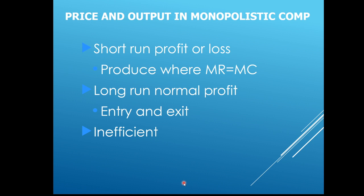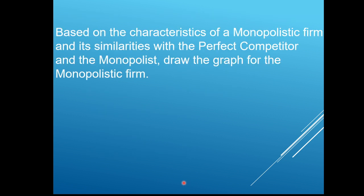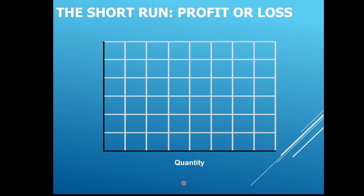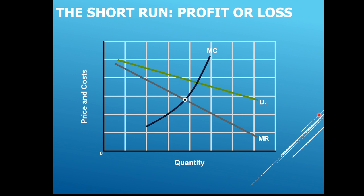Monopolistic competitors are inefficient because of product variety — we don't need all these different products, but people like having them. Let's draw the short-run profit or loss graph. We have quantity on the horizontal axis and price on the vertical. We draw our MR curve and demand curve — MR is below the demand curve, and the slope of the curve is more elastic — it's a highly elastic demand curve. Then we add in the marginal cost curve and the ATC curve, and go to where MR equals MC.